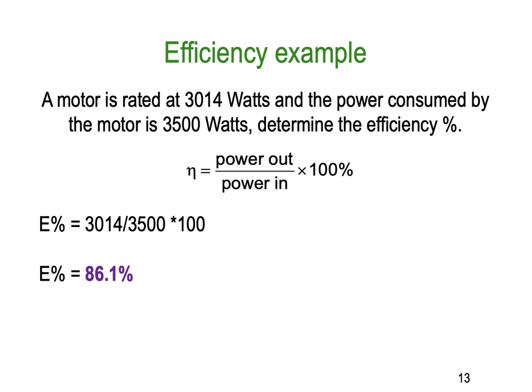Here's an example: a motor rated at 3014 watts and the power consumed by the motor is 3500 watts. Determine the percent efficiency. We've got 3014 as the output power, the motor input is 3500, multiplied by 100, gives us 86.1 percent. So 86.1 percent of the energy going into the motor is actually coming out as mechanical force.